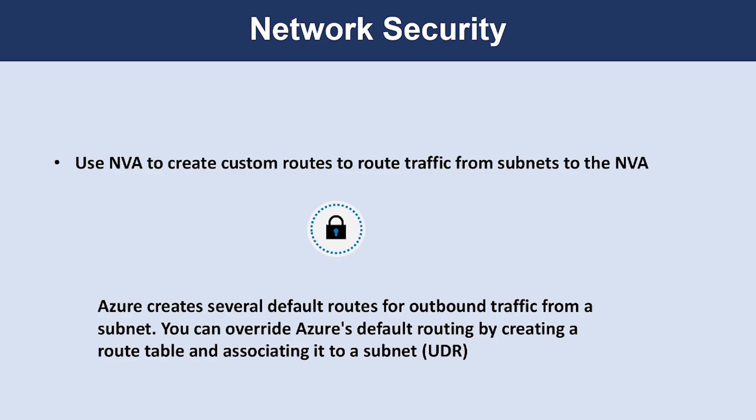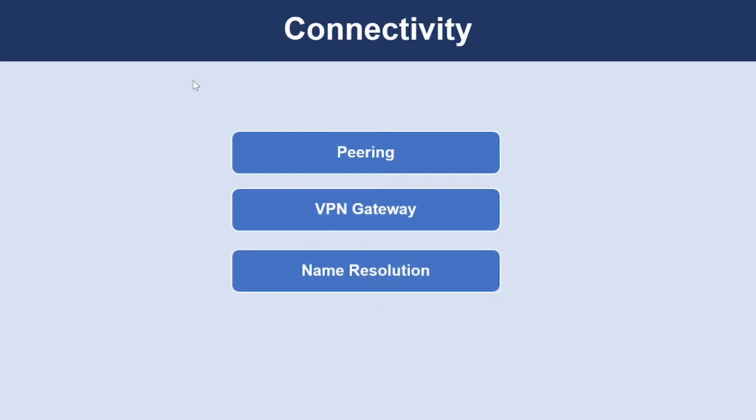For network security, you can filter network traffic to and from resources in virtual networks using network security groups and network virtual appliances. You can control how Azure routes traffic from subnets and limit who in your organization can work with resources in virtual networks. You can also view a sample design of implementing a perimeter network, also known as a DMZ, between Azure and the internet. You can override Azure's default routing by creating a route table and associating it with a subnet.